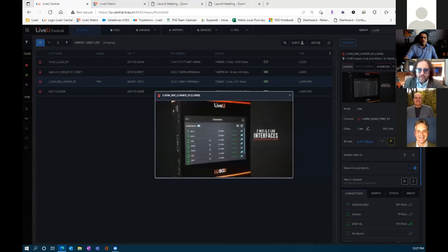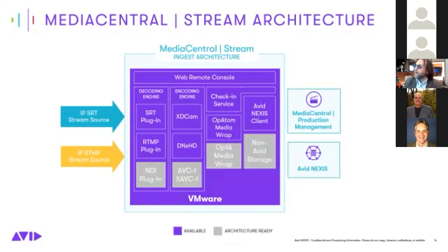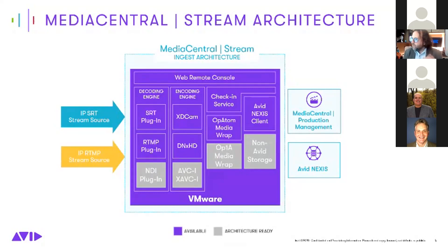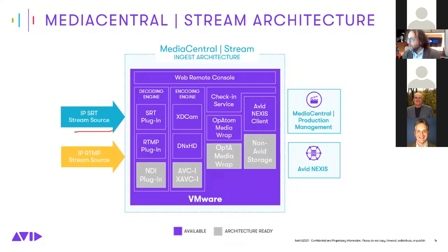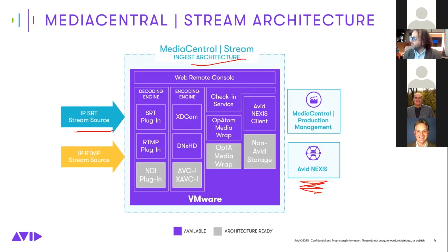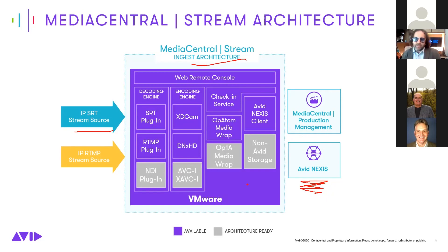I'm going to share my screen and start with the Media Central Stream architecture currently in use. That big purple box in the middle is my Media Central Stream VM. I'm using VM technology here — it's an on-prem system located in Burlington, Massachusetts. On the left-hand side, we take the stream in through Media Central Stream, then send it to Avid Nexus — my shared storage. Everything in the purple box is what we can do today; the gray box shows things in progress or coming soon, like NDI, AVCI codec, OP1A, and non-Avid storage.